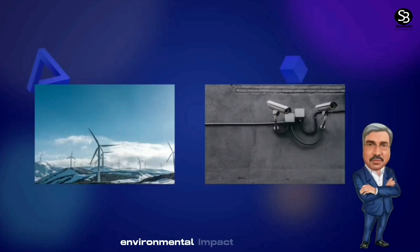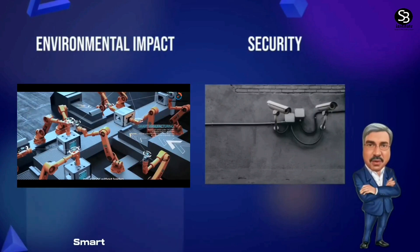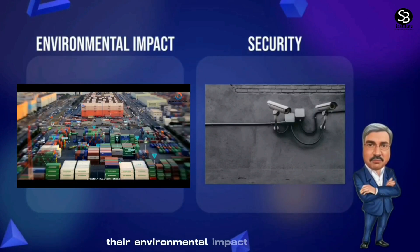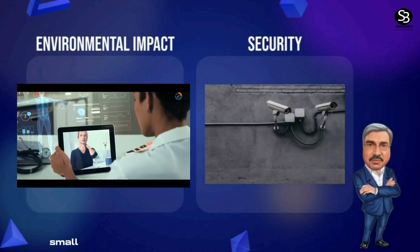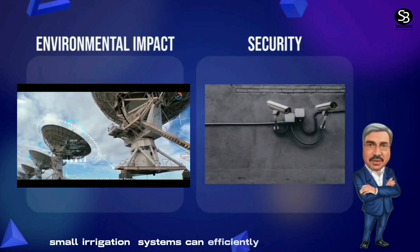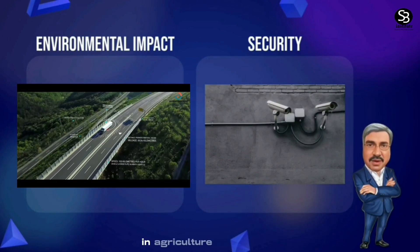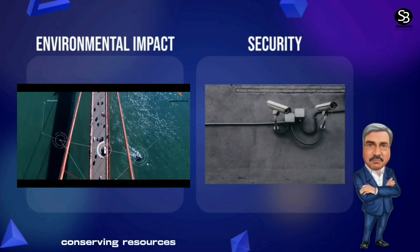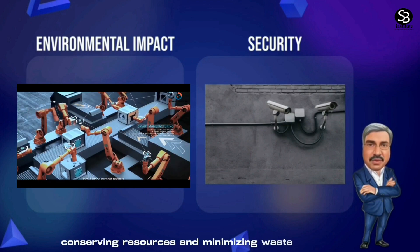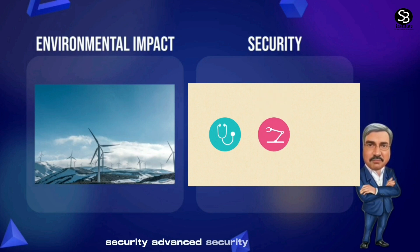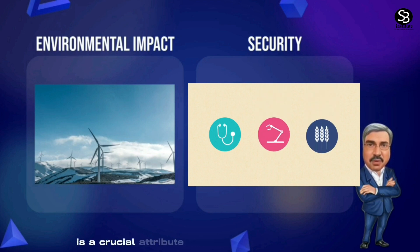Environmental impact: Smart objects hold promise for lessening their environmental impact. For instance, smart irrigation systems can efficiently manage water usage in agriculture, conserving resources and minimizing waste.